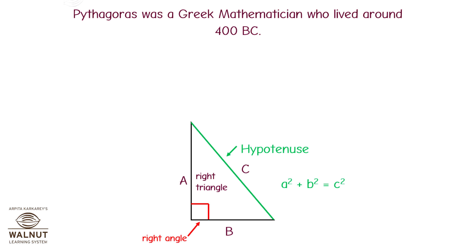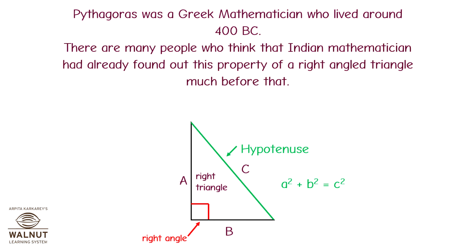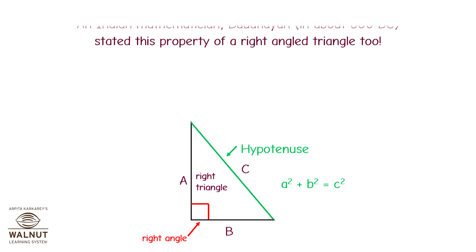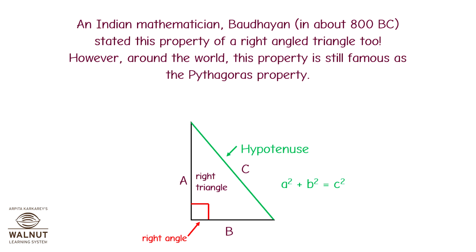Pythagoras was a Greek mathematician who lived around 400 BC. There are many people who think that an Indian mathematician had already found out this property of a right-angled triangle much before that. An Indian mathematician, Baudhayaan, in about 800 BC stated this property of a right-angled triangle too. However, around the world, this property is still famous as the Pythagoras property.